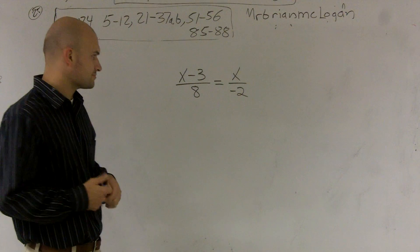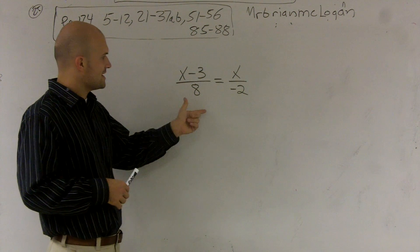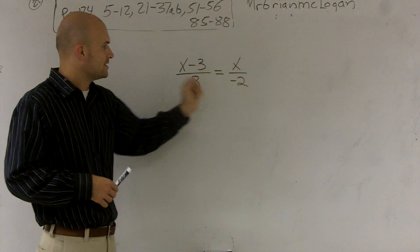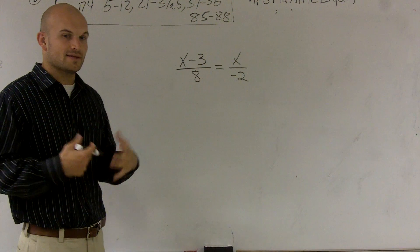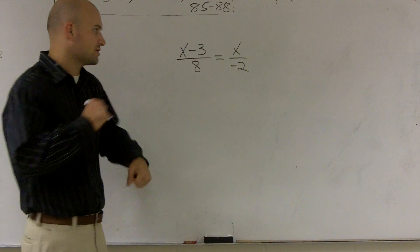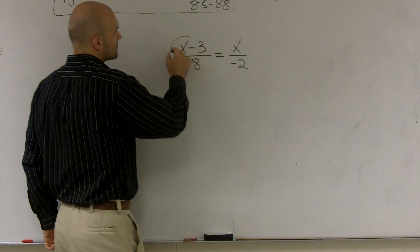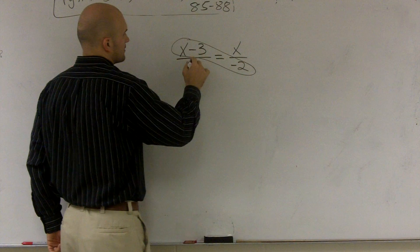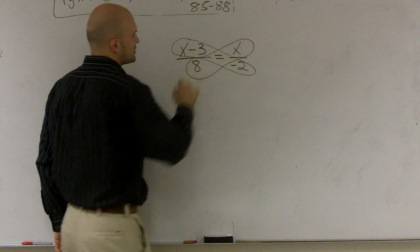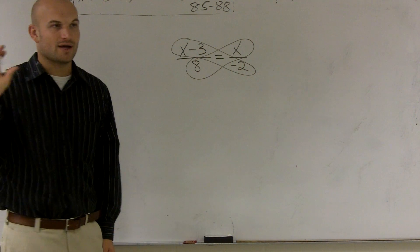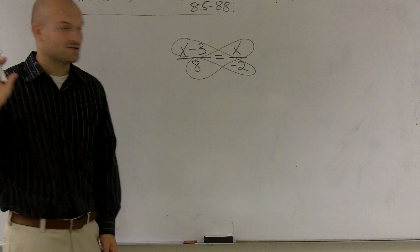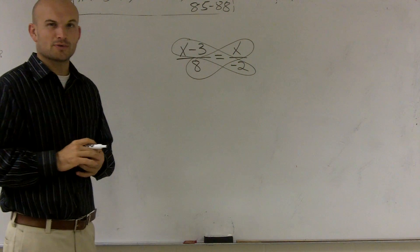And what you get is essentially the 8's cancel out here, your negative 2's cancel here, and you'd be left with something that we've kind of broken down into a shortcut, what we call cross multiplication. So kind of an easier way to describe that is you can just use a cross multiplication process,